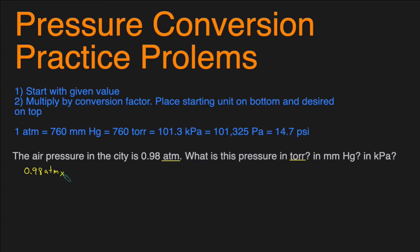Then we multiply it by a conversion factor. We place the starting unit on the bottom — so we start with ATM, and since I want to get rid of the ATM, I put ATM on the bottom. Then I put the desired unit on top. We're trying to convert to Torr, so we put Torr on top. Next we look at the conversions: next to Torr we have 760, so I put 760 here, and for ATM there's a 1. This conversion factor is saying that in every one atmosphere there are 760 Torr. Notice that the atmospheres cancel out and you're left with Torr.